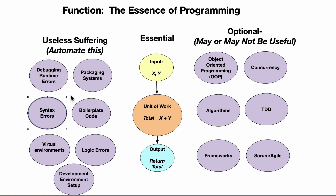Syntax errors are another one. If you're using formatting and linting tools that automatically check for this, you really don't need to worry about it — the editor can help you with syntax. Boilerplate code is another example: if you're defining a class or working with a framework, boilerplate code you don't understand means nothing. This is useless suffering that can be solved by tools like generative AI or a good editor.